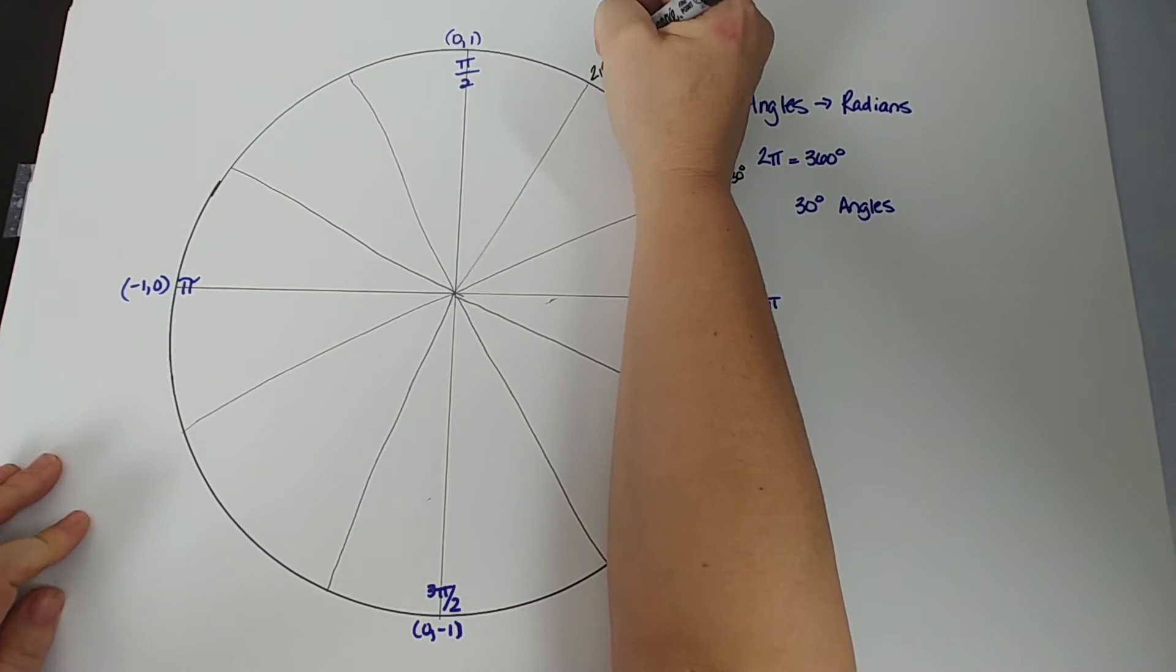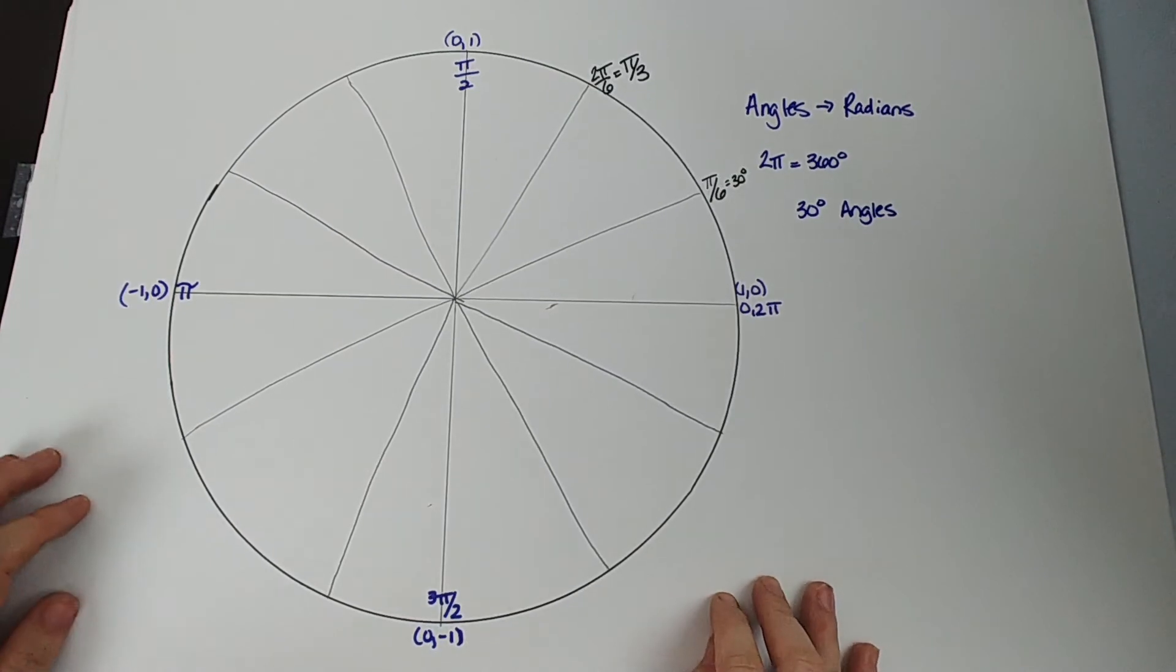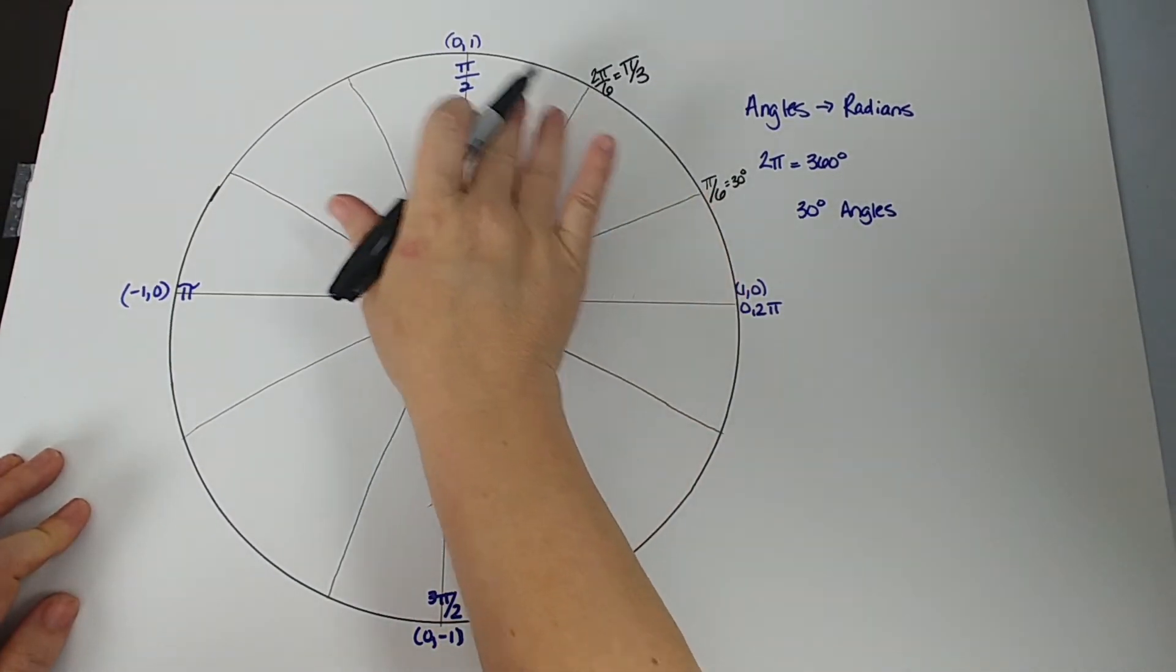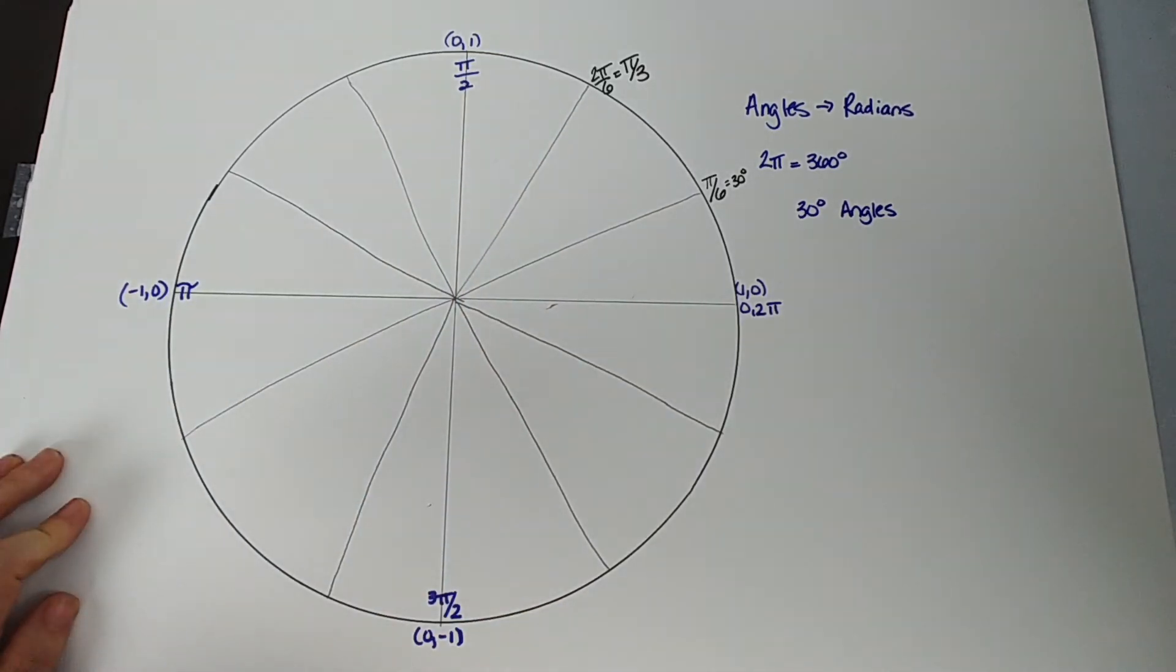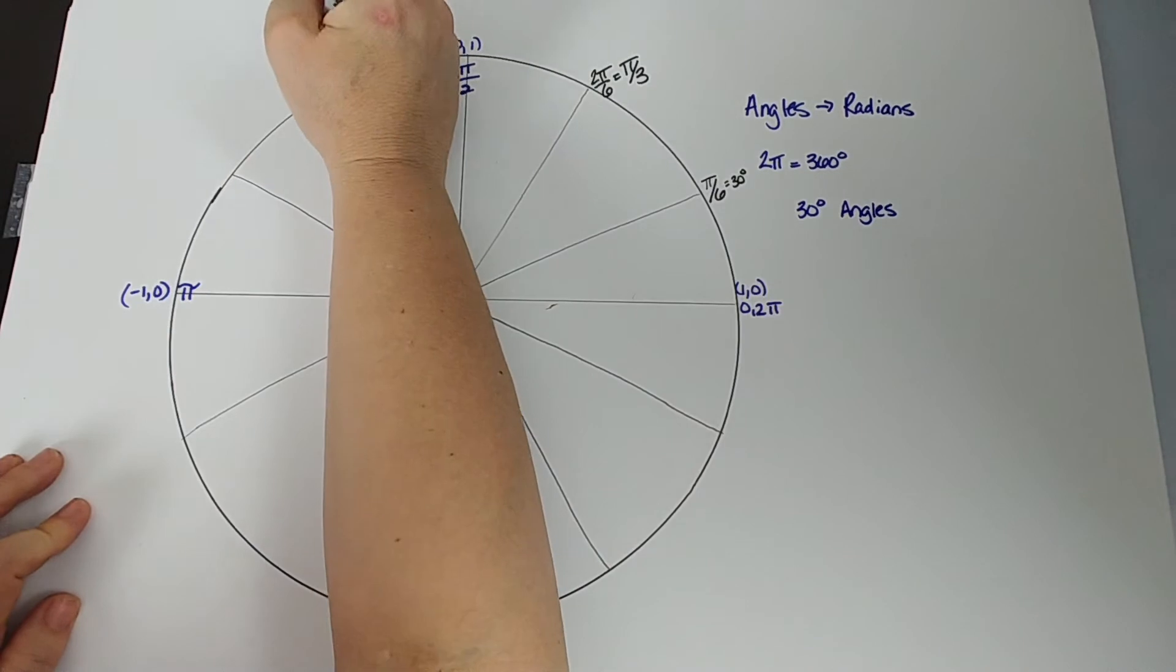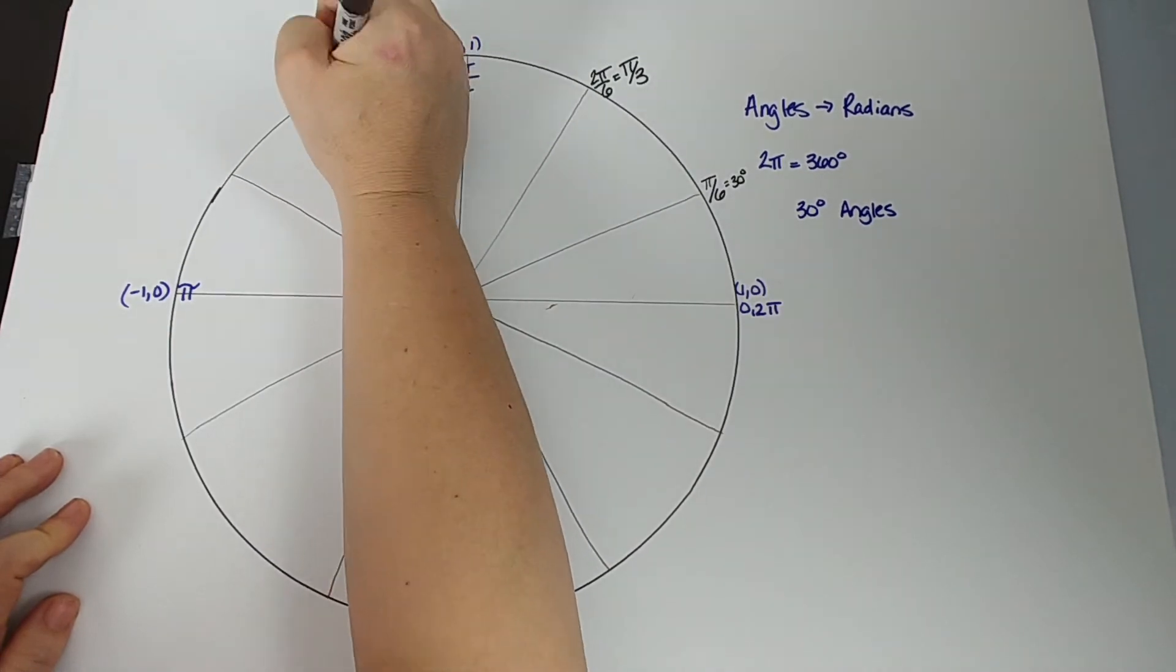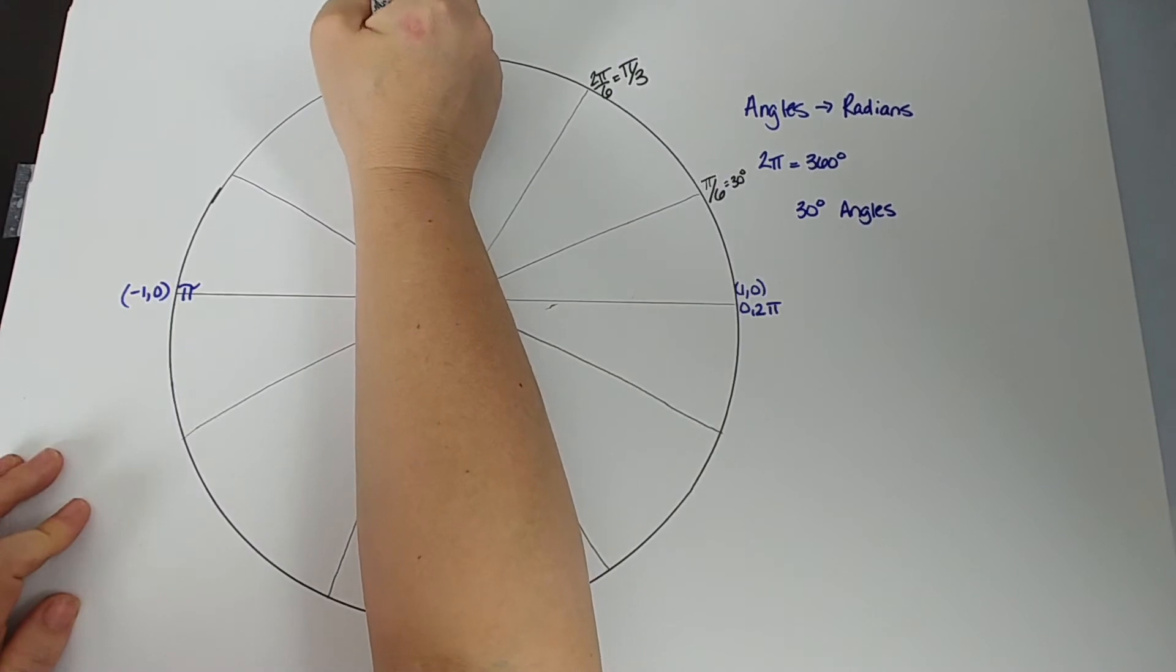I won't keep putting the degree measures there because I know you know the degrees. So what's this guy? This guy is 2π/6, which is π/3. That's your 60 degree angle, π/3. So we've got 1, 2, 3. 3π/6 is still one half, right? 3/6 is still one half, so that's π/2 still. 1, 2, 3. This is 4π/6, which means it's 2π/3.